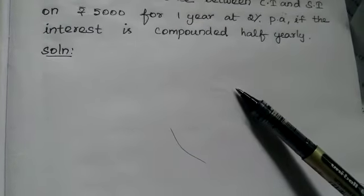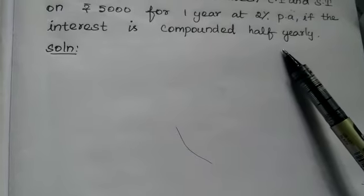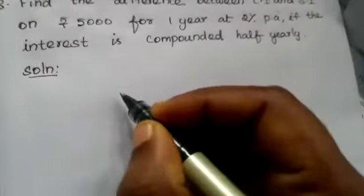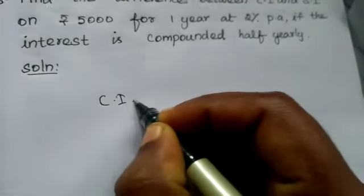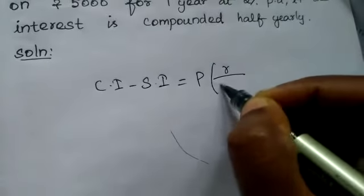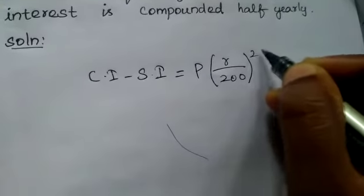You replace the 100 as 200 and 2 as 2N for 1 year. Now what is the formula? CI minus SI equal to P into R by 200 the whole power 2N.